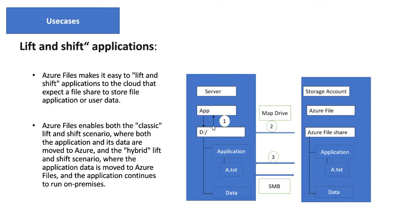In this example, whatever data we are storing on the D drive — it is a mounted drive. We have a new file share mounted as a D drive. It will show as a local drive, but it is actually a mounted drive. Whatever data the application logs will be stored in that location, and that D drive is mounted with Azure File Share. So if any disaster happens or your server crashes, your data will not be lost because you are storing it in Azure File Share.